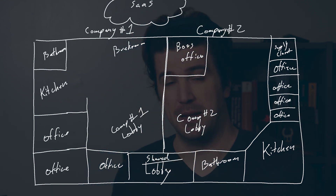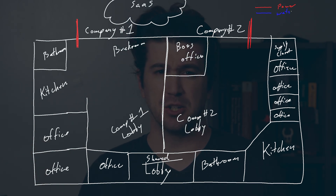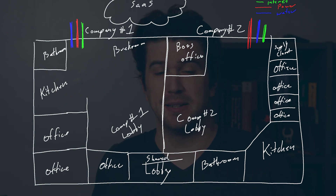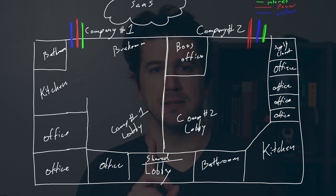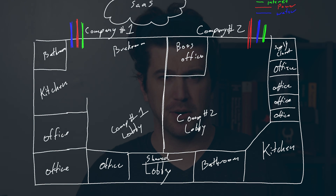Now, inside of company A, you have the internal multi-tenancy. The bathroom is a shared bathroom; the electricity is shared among all employees — this would be internal multi-tenancy. So if you provide a service inside of your company, this is internal multi-tenancy. If you provide a service outside of your company for other companies, this would be external multi-tenancy.